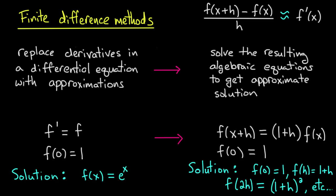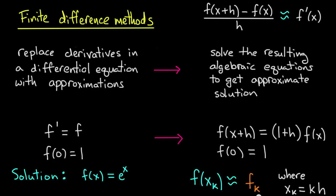So here's what we'll do instead. We're looking to approximate the function f at the points 0 and h and 2h, etc. So instead of calling those approximate values f(0), f(h), etc., we'll call them f_k. And f_k will be an approximation to f at the point x_k, where x_k is k times h.